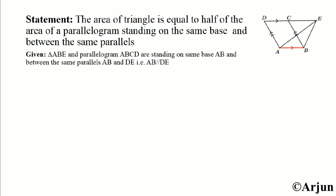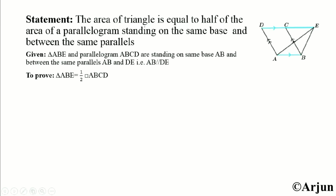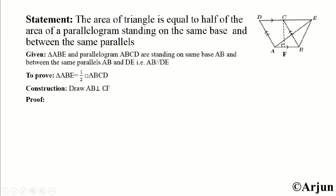Given: triangle ABE and parallelogram ABCD are standing on the same base AB and between the same parallels AB and CD — that means AB is parallel to CD. To prove: area of triangle ABE is equal to half the area of parallelogram ABCD.